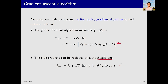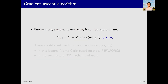This gives us a new equation. Nevertheless, this equation is still not directly usable because there is a Q_pi term — the true action value corresponding to policy pi. To solve this problem, we can replace Q_pi with an estimate Q_t.